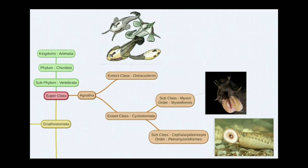Above class we have two superclasses: Agnatha and Gnathostomata. Agnatha means jawless vertebrates, and Gnathostomata means jawed vertebrates — they have a mobile jaw. In superclass Agnatha we have two classes: the extinct class Ostracodermi and the extant class Cyclostomata.